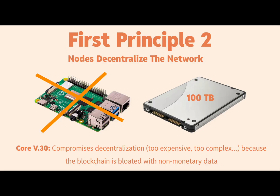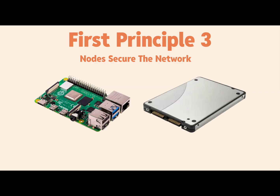First Principle Two: nodes decentralize the network. Right now it's fairly easy to run a Bitcoin node — a Raspberry Pi, a cheap computer, or an old laptop with a one-terabyte drive, though that still costs a few hundred dollars and isn't accessible to everyone. Core v30 compromises decentralization when the blockchain becomes bloated with non-monetary data, making it too expensive or complex to run a node. What happens when you need a 100-terabyte drive? We've already seen centralization happen in mining — you used to mine with old computer parts from Goodwill; now you need ASIC rigs and massive electricity investment.